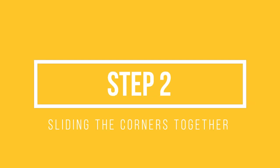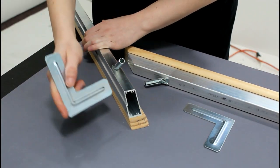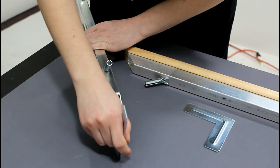The second step will be sliding the corners together. Begin with sliding two aluminum corners into one side of a stretcher bar.